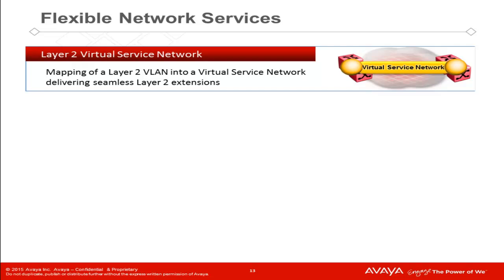If we relate an ICID to something, we create what Avaya terms a Virtual Services Network, or VSN for short. If we attach an ICID to VLANs, we create a Layer 2 VSN. These are useful in any instance where you would use Q-tagging within a traditional network core. A VLAN can be extended virtually anywhere across the SPB network regardless of distance. Uses for this are guest VLANs, voice VLANs, L2 connectivity between data centers for services replication or VM mobility. L2 VSNs are also very useful for the distribution of SCADA protocol environments, such as those used for programmable logic controllers and remote terminal units in transit authorities, power grids, automated manufacturing, and many other use cases.